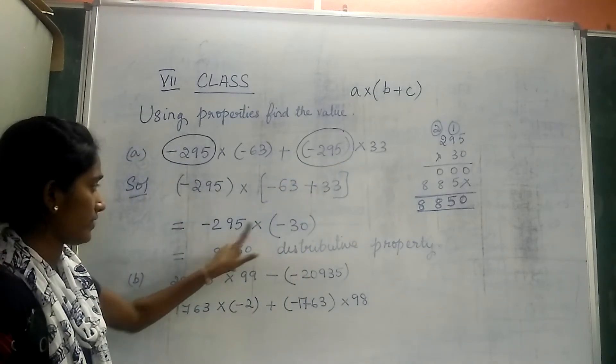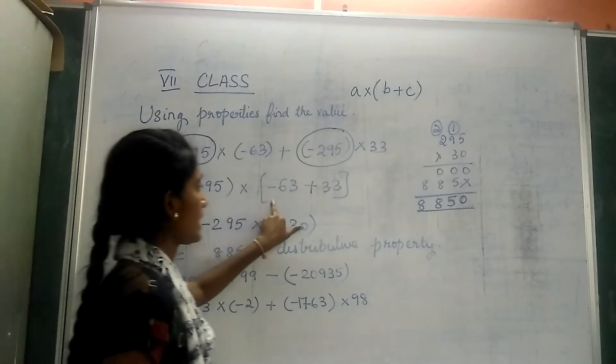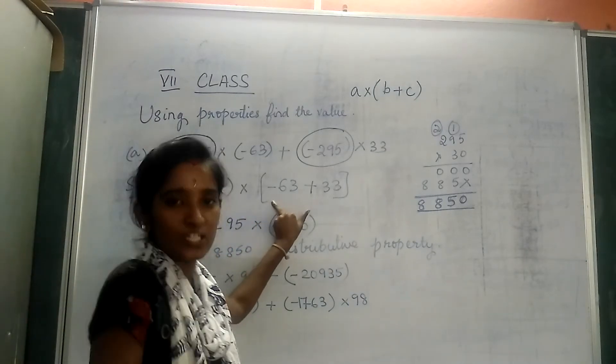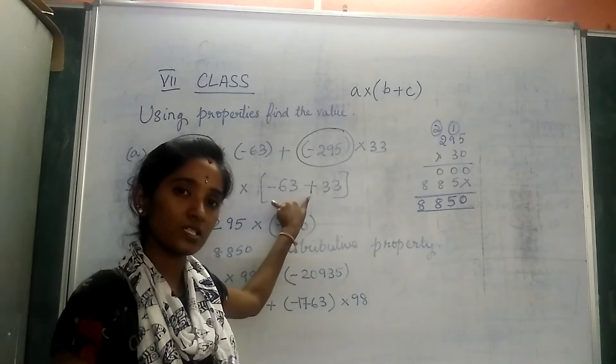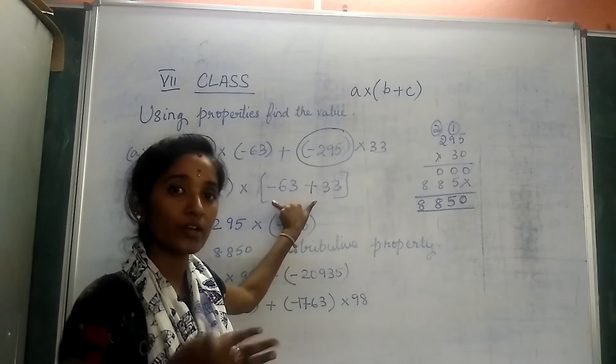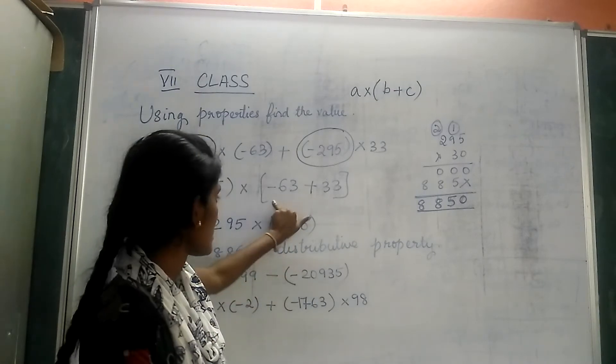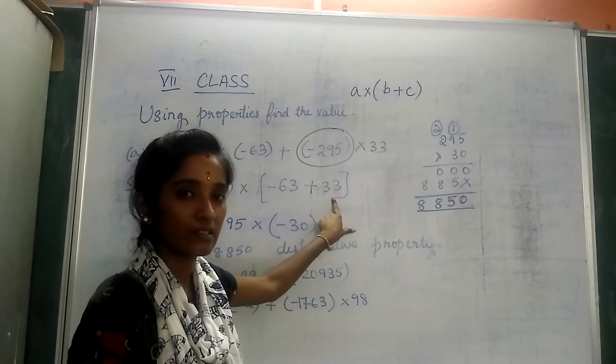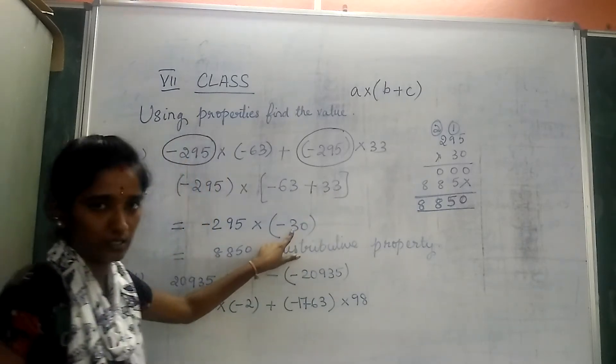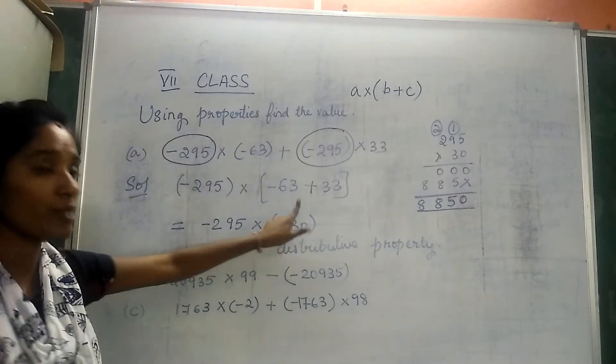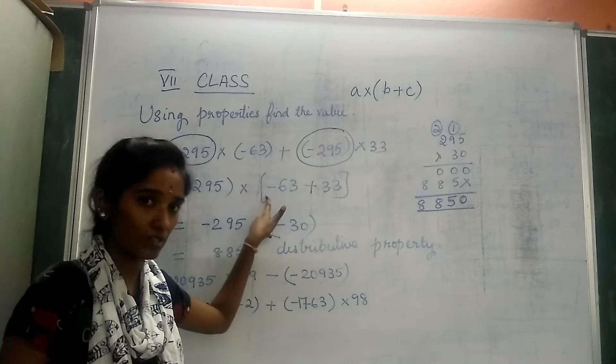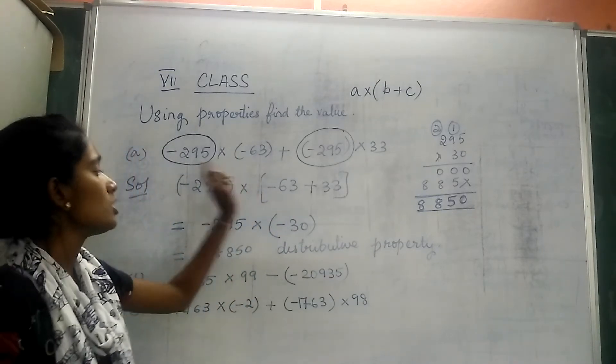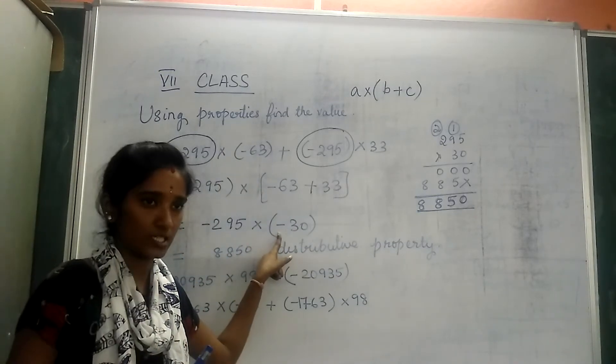Now -295 times, here we have a positive sign and a negative sign. When one positive and one negative is there, what do we do? It is a subtraction state. So 63 - 33 we get as 30. But the sign remains the same because the highest number is 63 here. It has a minus sign, so we write it as minus.